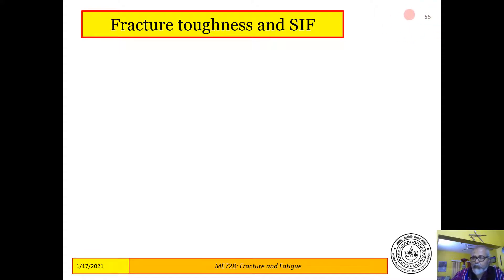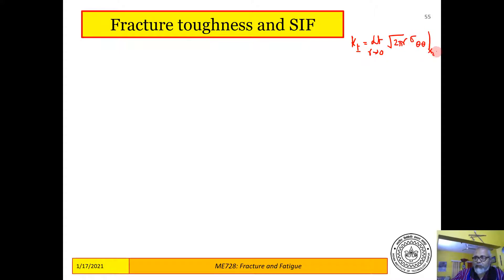For both Mode 1 and Mode 2, the definitions were as follows. For Mode 1: K1 = limit as r tends to 0 of √(2πr) · σ_θθ at x2 = 0. For Mode 2: K2 = limit as r tends to 0 of √(2πr) · σ_rθ at x2 = 0.